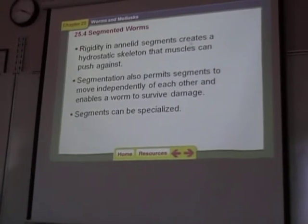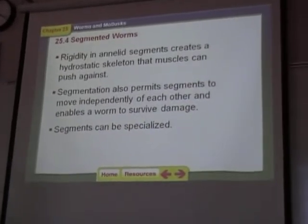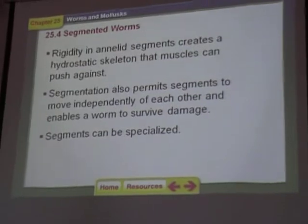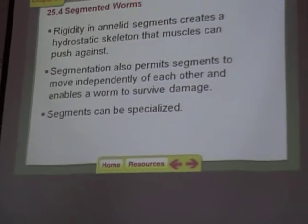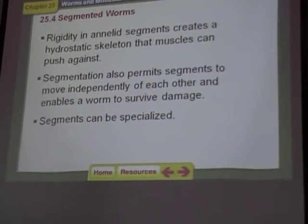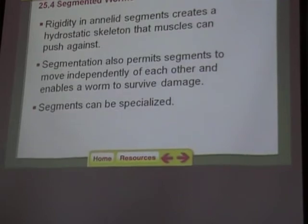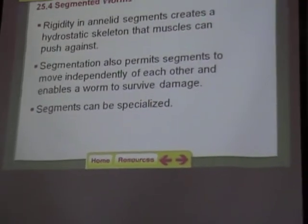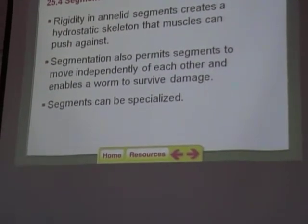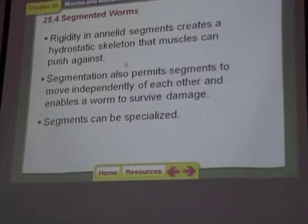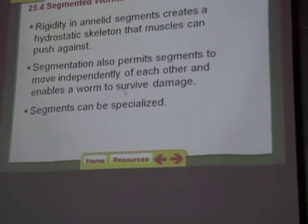Rigidity in annelid segments creates a hydrostatic skeleton that muscles can push against. A hydrostatic skeleton is a water skeleton. What they do is absorb water from the soil — it goes inside them and is under very high pressure, meaning the water is pushing out against the sides of their body. That's called a hydrostatic skeleton: water pressure holds their body rigid. Hydro means water, static means still — hydrostatic skeleton.